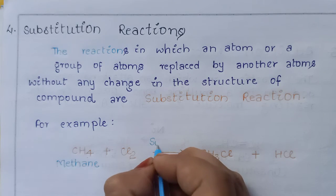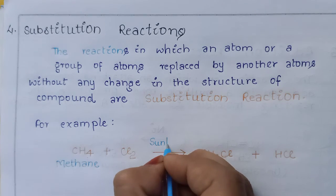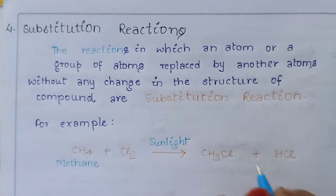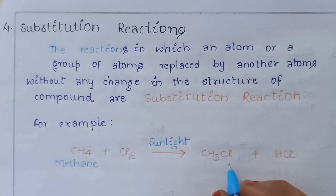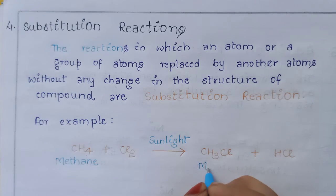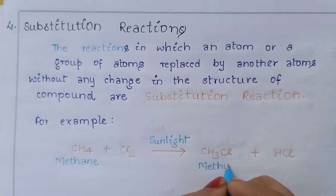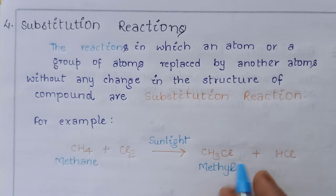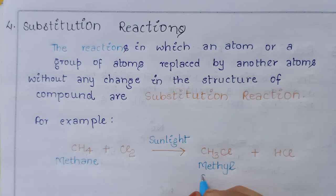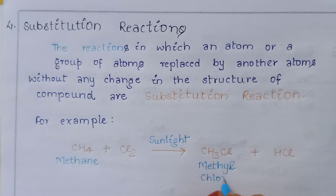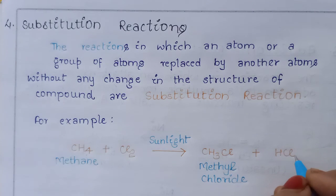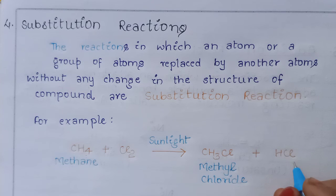This reaction takes place in the presence of sunlight. The name of the organic compound CH3Cl is methyl chloride — methyl is written for the CH3 group and chloride for Cl. The other product, HCl, is called hydrogen chloride.